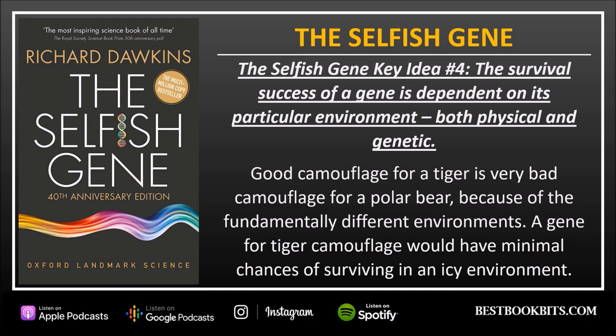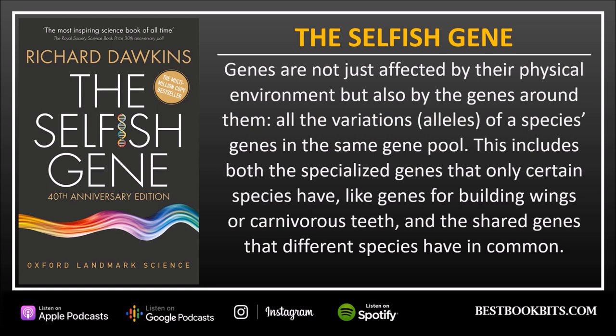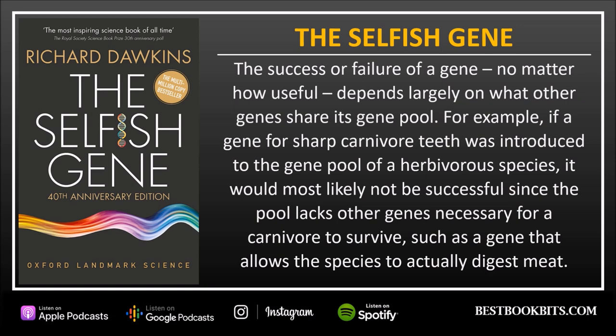The Selfish Gene, key idea number four: the survival success of a gene is dependent upon its particular environment, both physical and genetic. Good camouflage for a tiger is very bad camouflage for a polar bear, because of their fundamentally different environments — a gene for tiger camouflage would have minimal chances of surviving in an icy environment. Genes are not just affected by their physical environment, but also by the genes around them. All the variations, or alleles, of a species' genes make up the same gene pool. This includes both the specialized genes that only certain species have, like genes for building wings or carnivorous teeth, and the shared genes that different species have in common. The success or failure of a gene, no matter how useful, depends largely on what other genes share its gene pool. For example, if a gene for sharp carnivore teeth was introduced to the gene pool of a herbivorous species, it would most likely not be successful, since the pool lacks other genes necessary for a carnivore to survive, such as a gene that allows the species to actually digest meat.